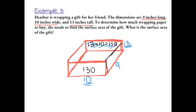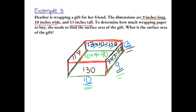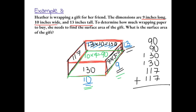Next, the side piece is 9 by 13, so 9 times 13 is 117, and the opposite side is also 117. The bottom piece is 10 by 9, which is 90, and the top of the box is also 90. So we have 90 twice for top and bottom, 130 twice for front and back, and 117 twice for the sides. Let's add them all up to find the total surface area.